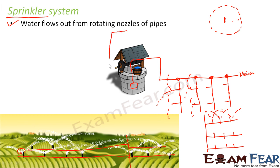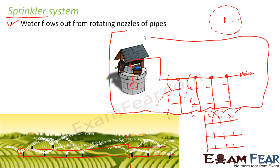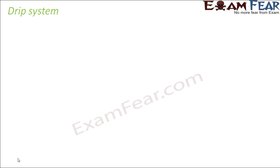If you look at this picture, it gives you an idea of how the main pipeline and the perpendicular pipelines are connected. This is the main pipeline and these are the perpendicular pipelines.